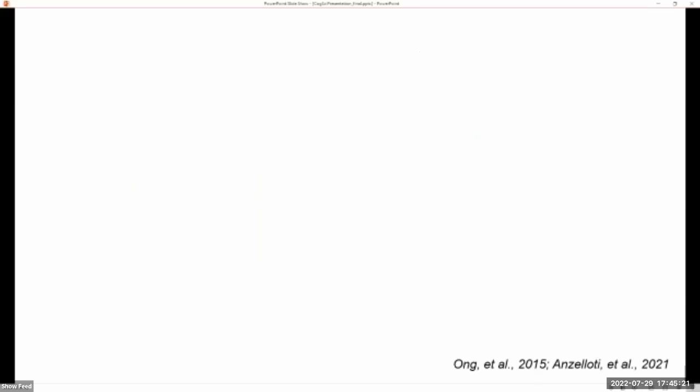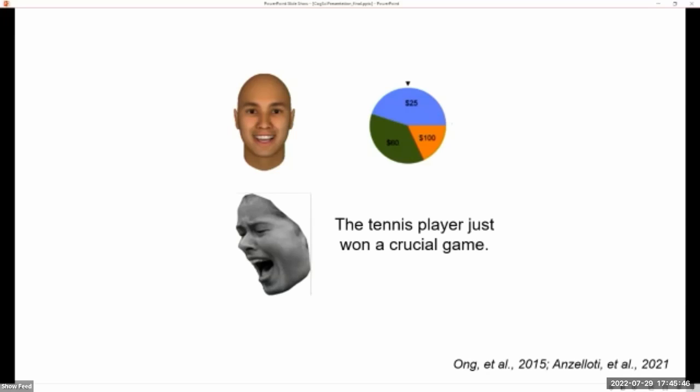So current work examining this cue integration model shows that people's inferences of others' emotions based on knowledge of situation as well as facial behaviors are best explained by the Bayes cue integration model. And this work used computer-generated facial expressions along with outcomes won from spinning a wheel as contextual cues. In more recent extension of this work, researchers have used real-world naturalistic expressions, but again paired with a limited set of contextual cues that involve outcomes from a tennis match.